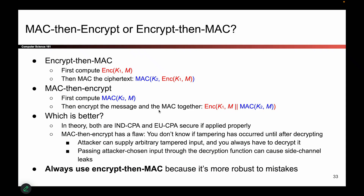The very subtle flaw is that you first have to decrypt before you can detect tampering. If we look at the way you would process the message as Bob receiving it, in the encrypt-then-MAC case, you first check the MAC. So if something is tampered, you check the MAC, it's no good, and you stop right away.